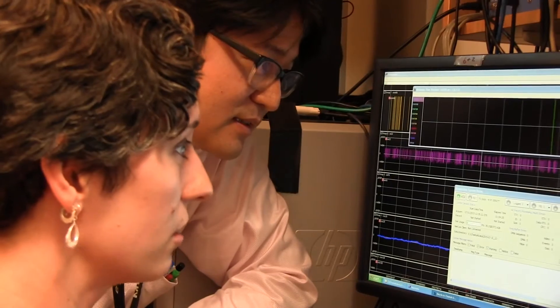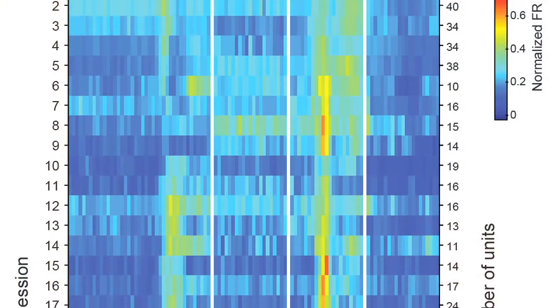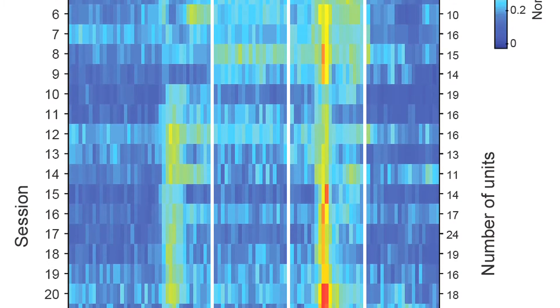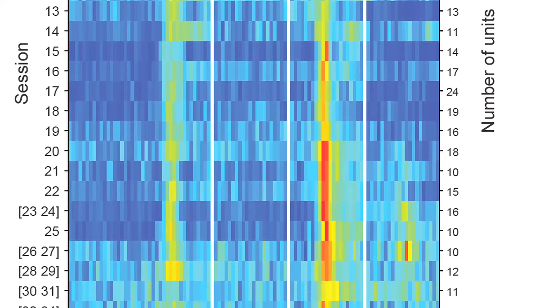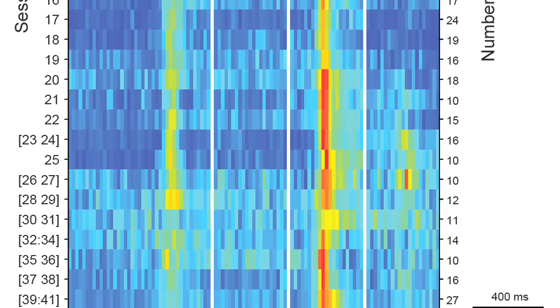We next wanted to know what happens to this representation while the animal is learning. What we found is over time, one of the populations of cells, the cells that respond to both cost and reward together, those cells are gradually refining their responses. They're becoming more and more refined in exactly when they're firing at the end of the trial and they're firing a bit more strongly.